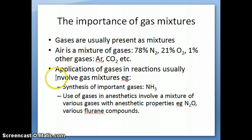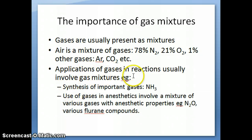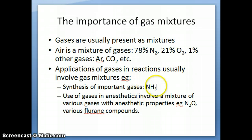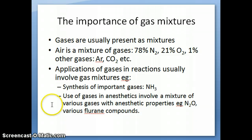Argon and carbon dioxide are the main components of those other gases. In applications, if you want to use gases in industry or in production, these are usually made in mixtures because the reactants are gases and the products are gases, so they exist as mixtures. For example, in the synthesis of ammonia, we use both nitrogen and hydrogen gas to make ammonia, so it's a mixture of gases present in that reaction container.